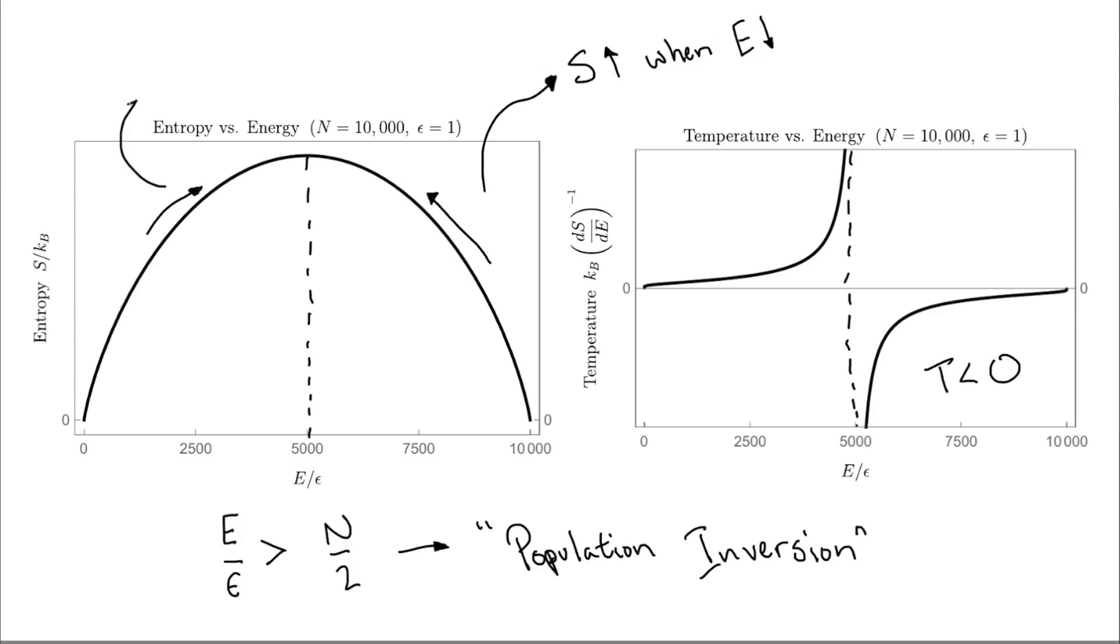Another way to think about it is that if the system wants to maximize entropy, as the second law of thermodynamics tells us it will, at positive temperatures it has to pull in energy to do so, but at negative temperatures it has to lose energy.